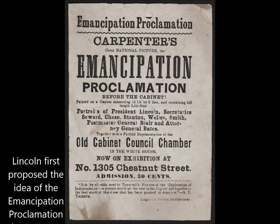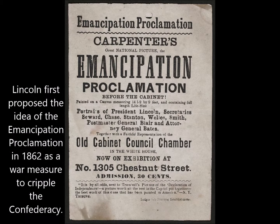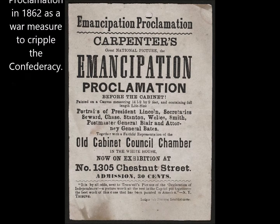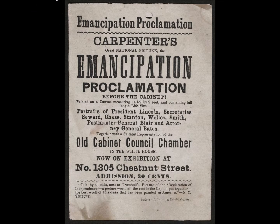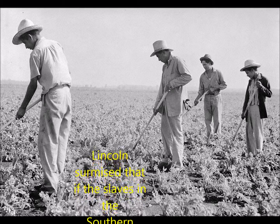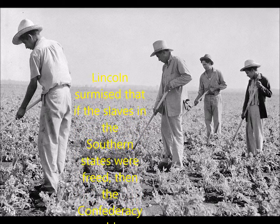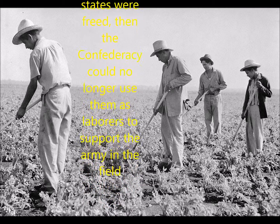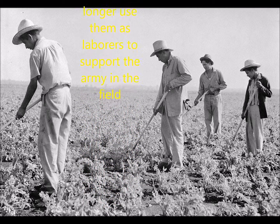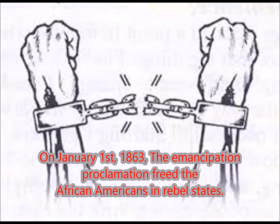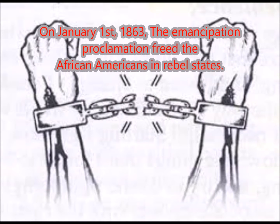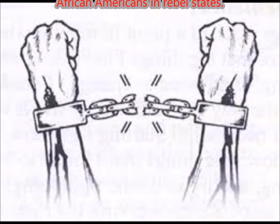Lincoln first proposed the idea of the Emancipation Proclamation in 1862 as a war measure to cripple the Confederacy. Lincoln surmised that if the slaves in the southern states were freed, then the Confederacy could no longer use them as laborers to support the army in the fields. On the 1st of January 1863, the Emancipation Proclamation freed the African-Americans in rebel states.